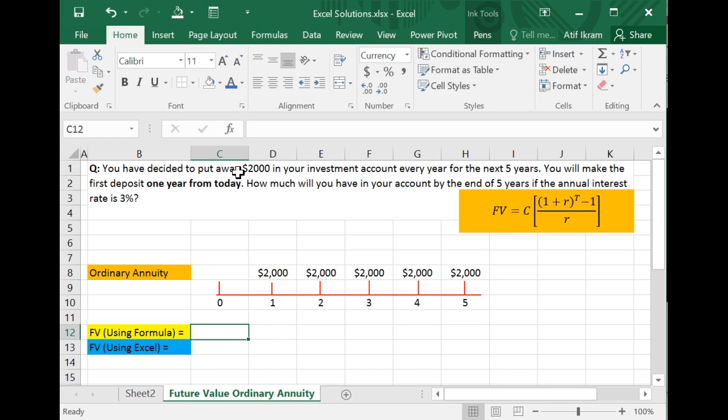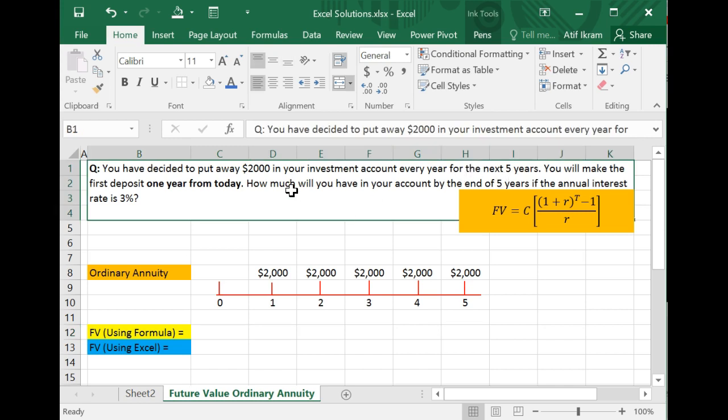Let's suppose that you have decided to put away $2,000 in your investment account every year for the next five years. So this is an annuity because you're going to be putting away $2,000 every year. It's a constant cash flow at regular intervals for a fixed number of years. That's the very definition of an annuity.